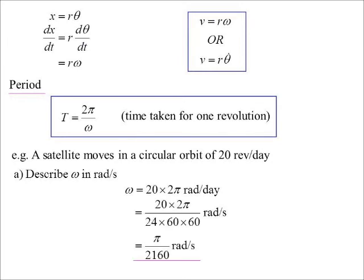So radians would be a revolution times 2π, but that's per day. So divided by 24, 60, 60 gives me per second. So π on 2160 radians per second.